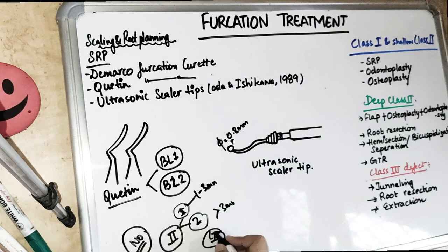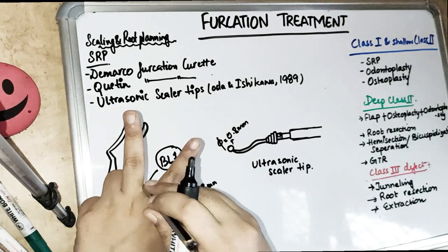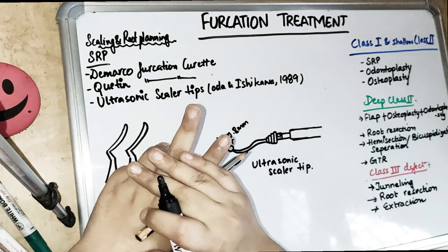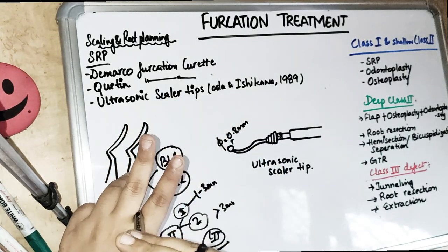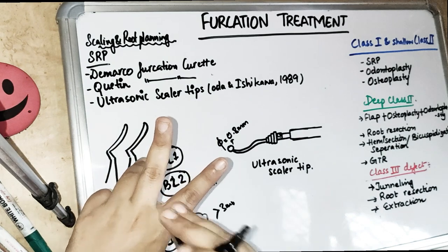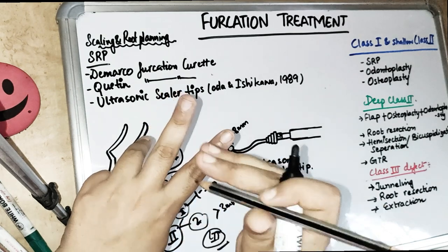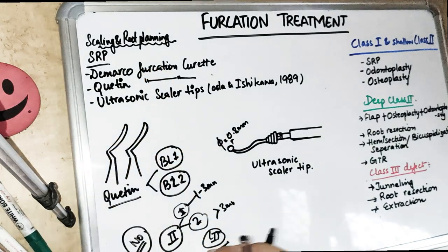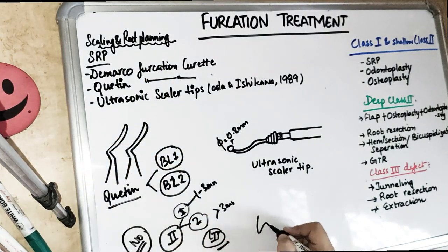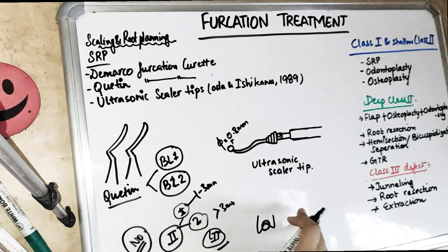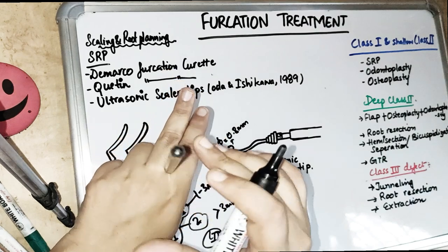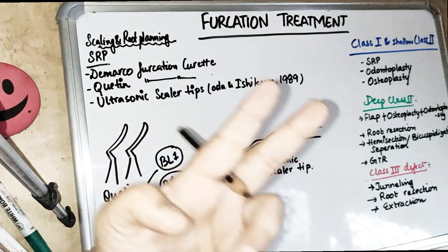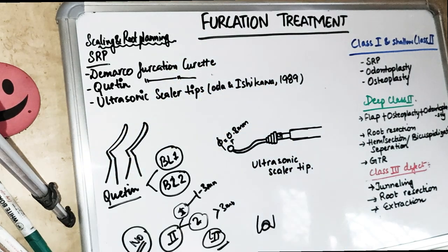Grade 3 is where there is no bone present at the interradicular area, but there is soft tissue covering, so there is no penetration of the probe. Clinically we cannot see the furcation because of soft tissue coverage, but on the radiograph there is a radiolucency at the furcation area. Grade 4 is where a tunnel exists between the roots and there is through-and-through penetration, so we can see the probe from the other end.